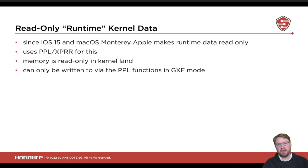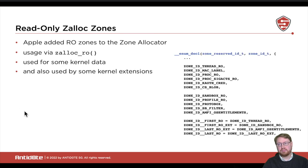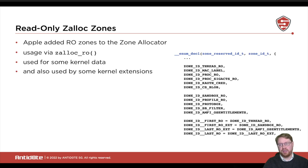What this basically means is that they make the memory read-only for kernel land, but in their PPL layer in the GFX mode they can actually write to it because under this mode the memory is writable. To achieve this, they extended the zone allocator to now also understand the concept of read-only zones. For that they have a dedicated function called zalloc_ro, which is available for allocating memory in these read-only zones. They also added a bunch of new zone IDs.